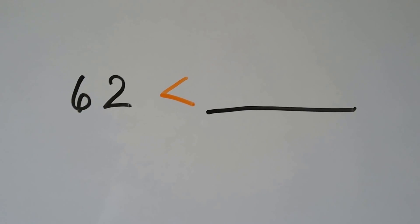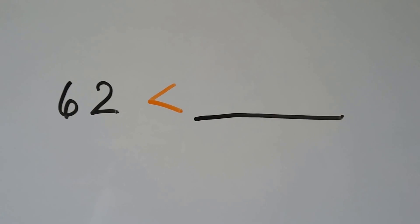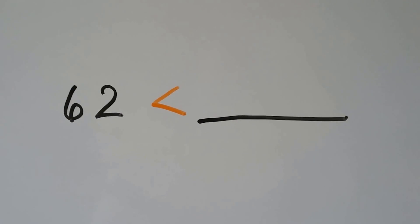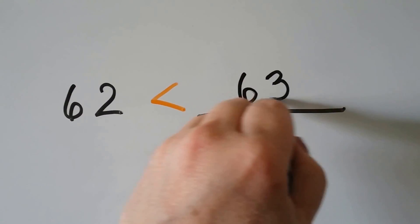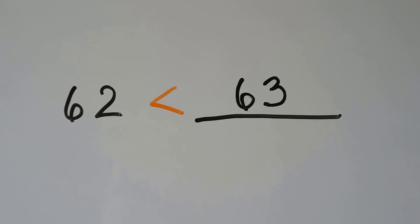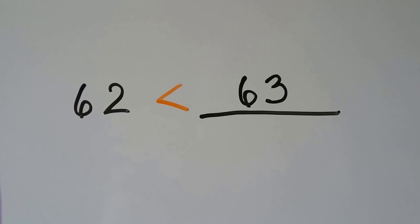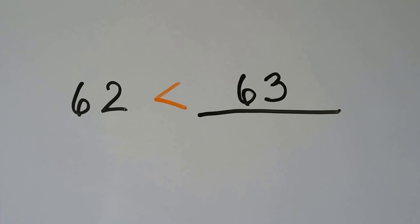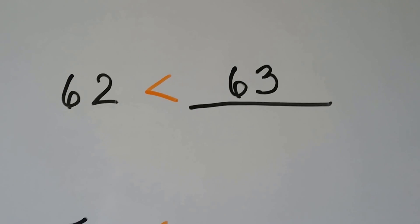62 is less than — we could think of any number that's bigger than 62. 62 is less than 63, and 64, and 65, and 66, and we could keep going with bigger numbers, because 62 is smaller than all of those numbers.